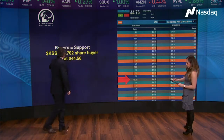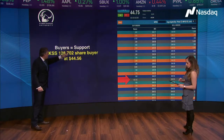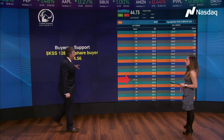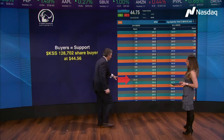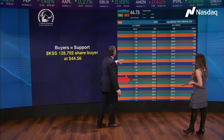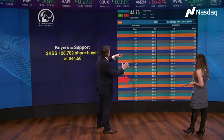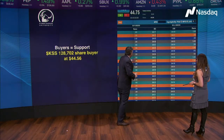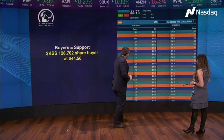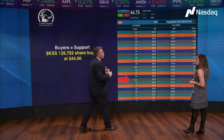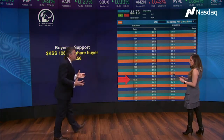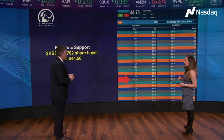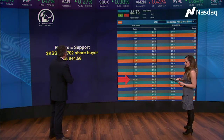When you look over here, buyers equal support. You have a 128,000-share seller just sitting right there. And when you look at Total View, you've got 200 shares, you've got 300 — that 128,000, what does that really tell you? That's a big buyer out there, and that is what makes that a support level.